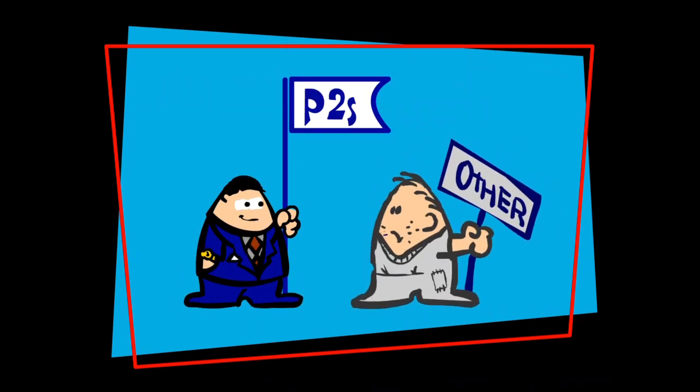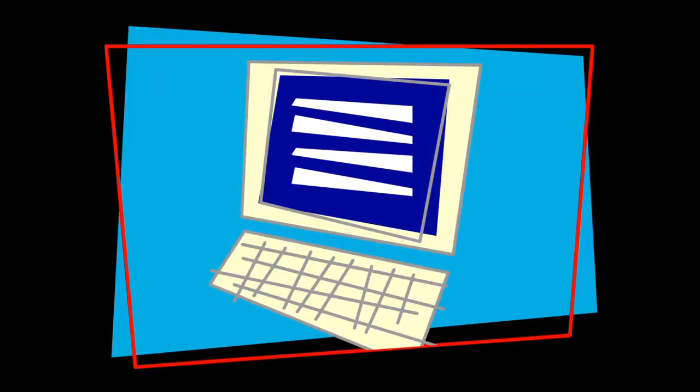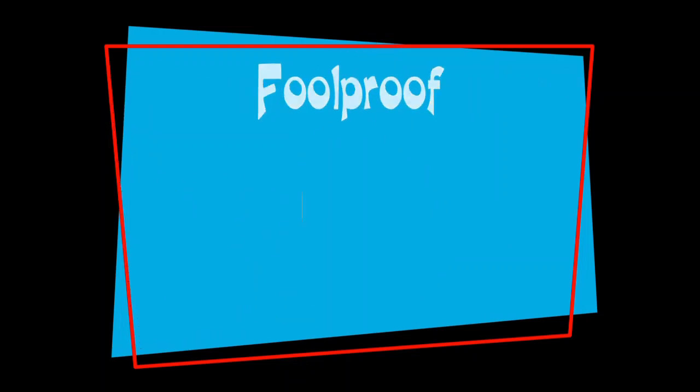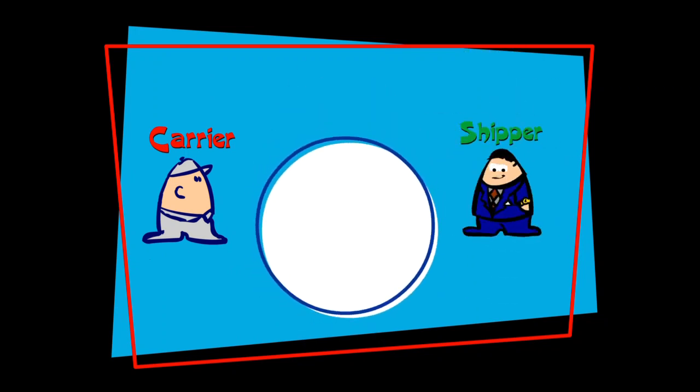Problem two: how does P2S succeed where others have failed? We succeed by keeping the information on shipper loads and carrier capacity in our database fresh. Combining the carrier's desire to get paid quickly and the shipper's need for real-time information, we positioned our product to service both sides of the transaction.